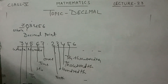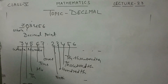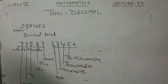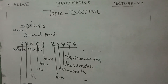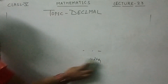So, a decimal is a number expressed in the scale of tens. The decimal point is a point or dot used to separate the whole part from the fractional part. Decimal numbers are read according to their place value. In this chapter, I will explain how to convert fractions to decimals and decimals to fractions.